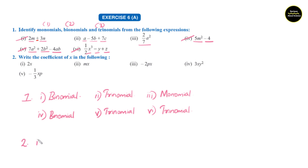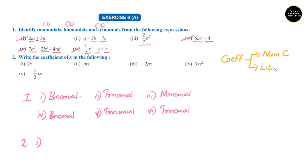Section number 2, question 1: write the coefficient of x in the following. We have already seen that there are two types of coefficient — numerical coefficient and literal coefficient. Numerical coefficient is any number; literal coefficient is any alphabet. But here it is simply mentioned 'coefficient' — it doesn't specify numerical or literal. So whatever comes with x will be our coefficient in this question.